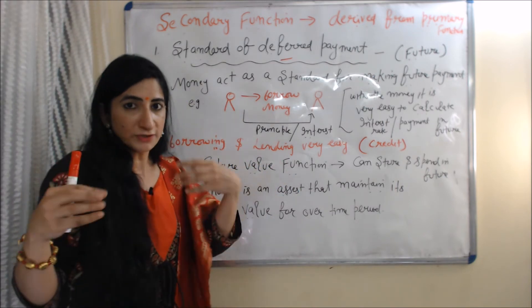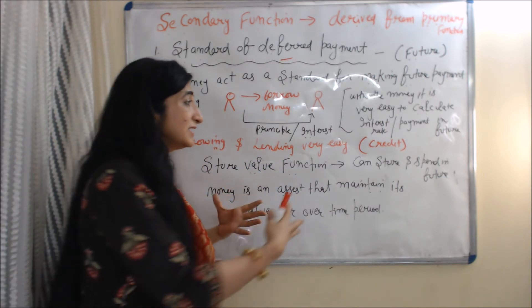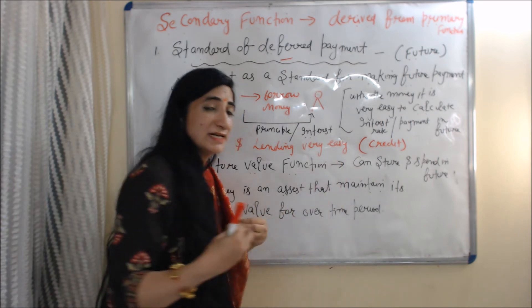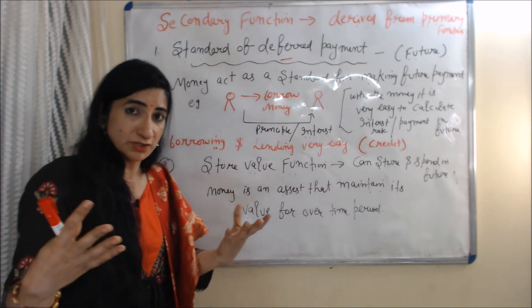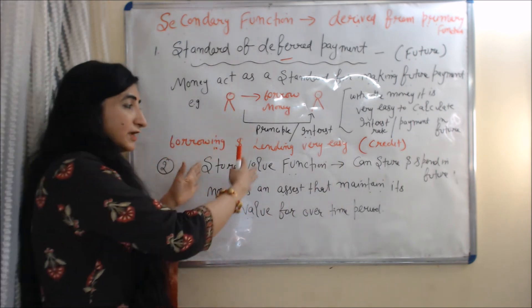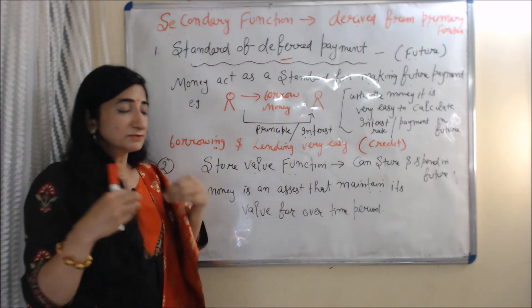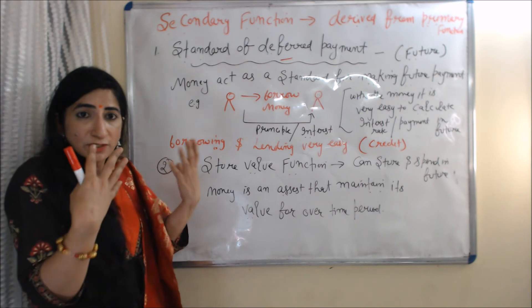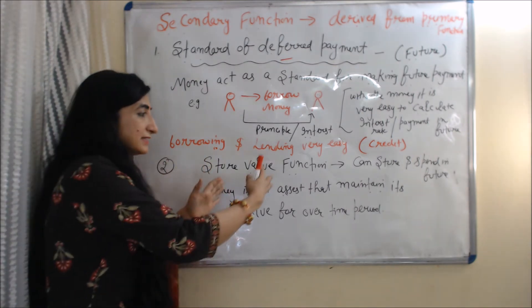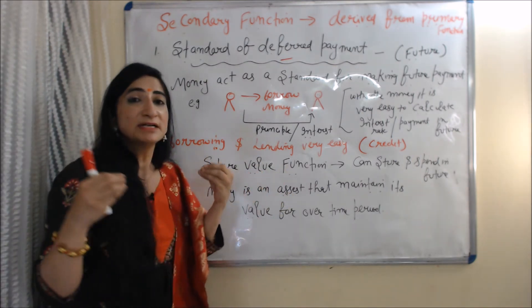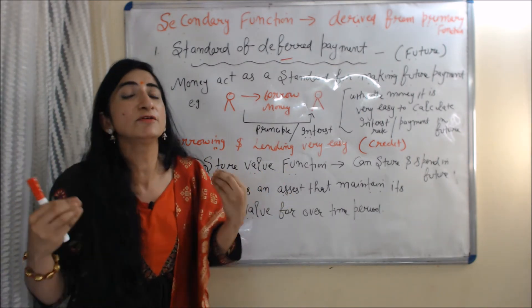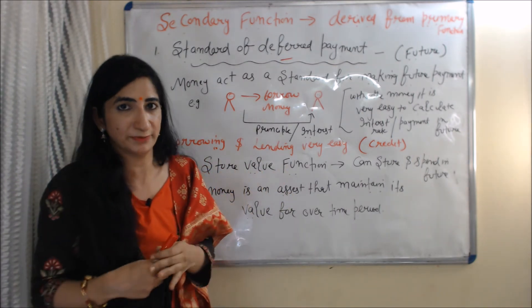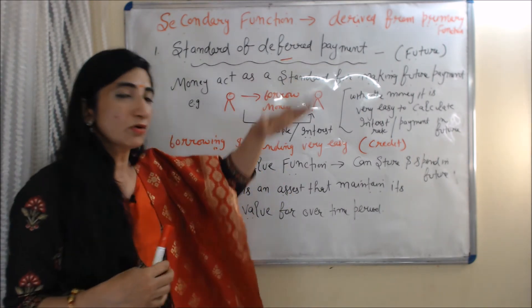The next secondary function of money is the store of value function. Store of value means we can store money and spend it in the future. This function is very important because money is an asset that maintains its value over a period of time.